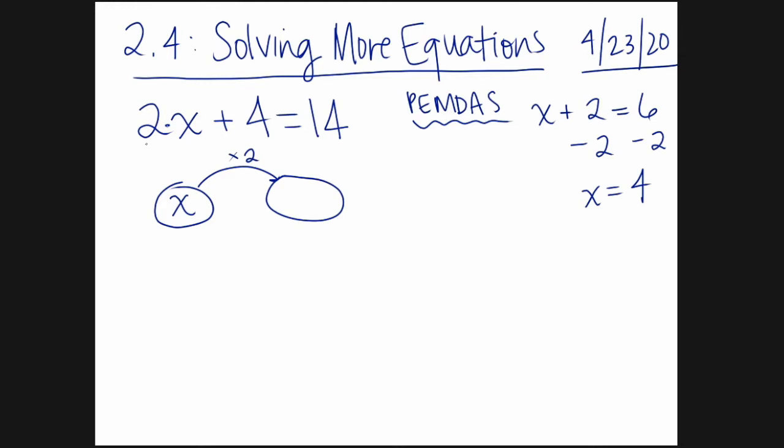Then what do we do once we multiply? Well, we have to add 4. So I'm going to write another arrow and write plus 4 above it. And finally, in the last node here, we know that the whole thing 2x plus 4 equals 14.